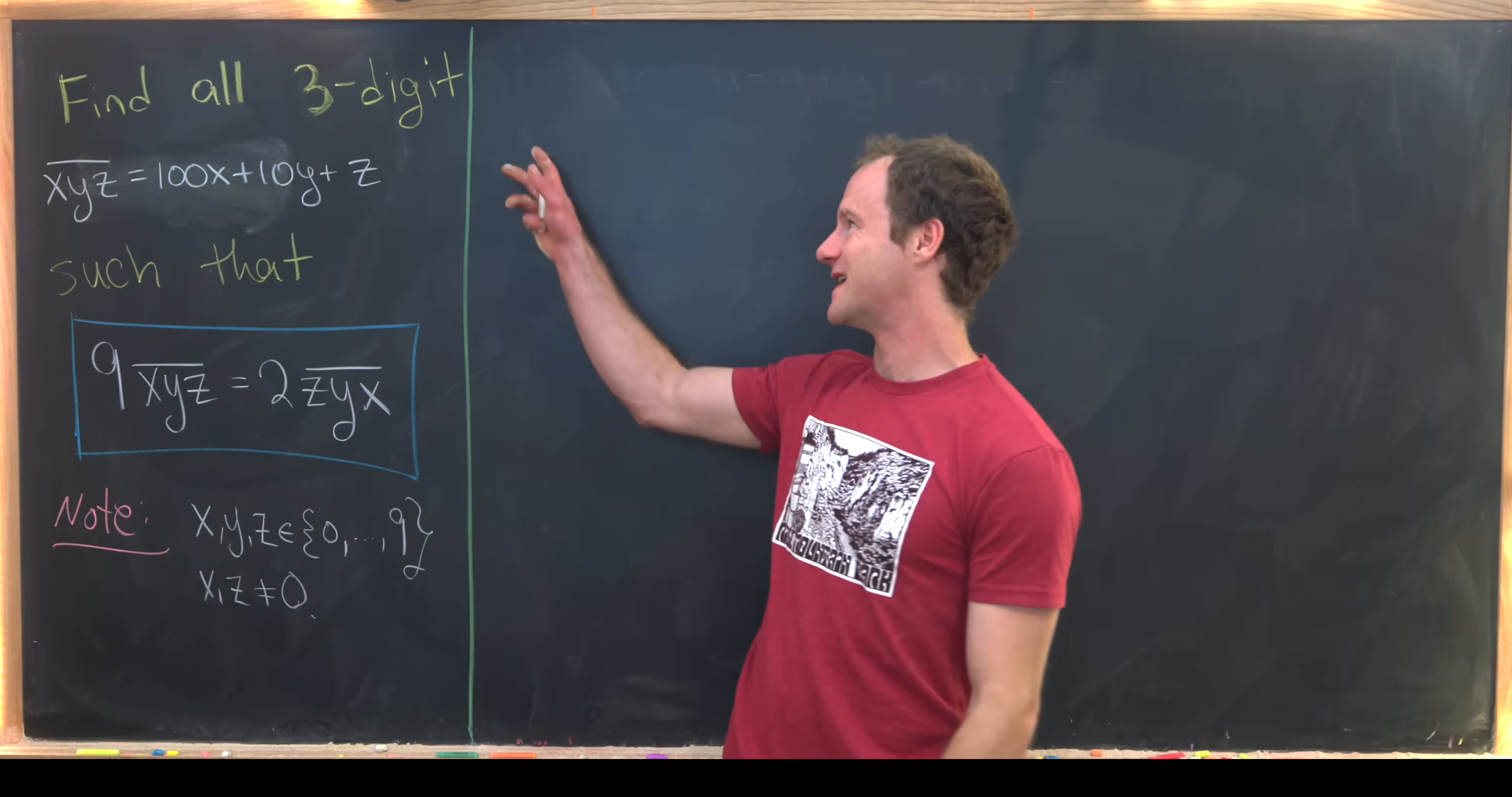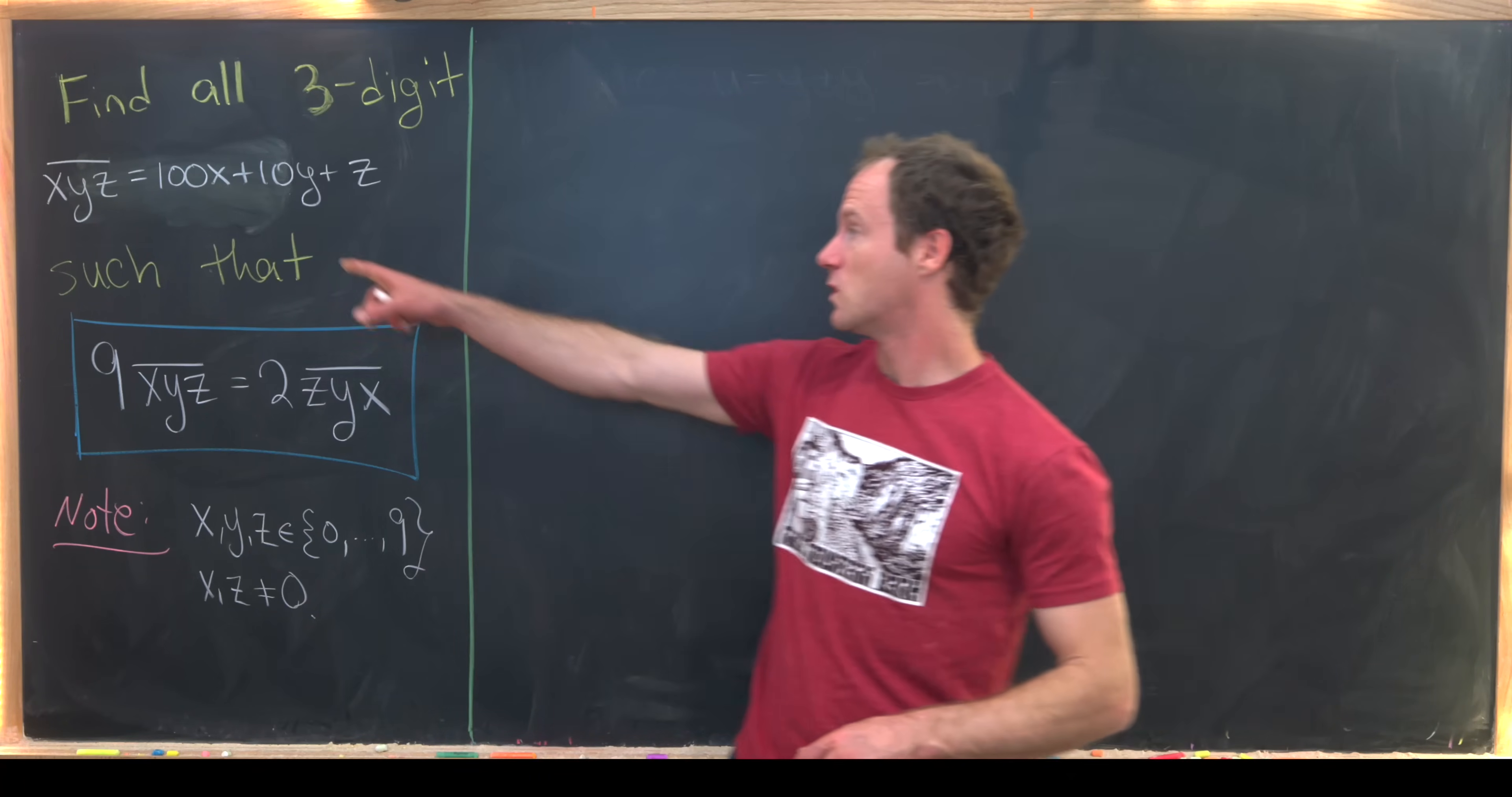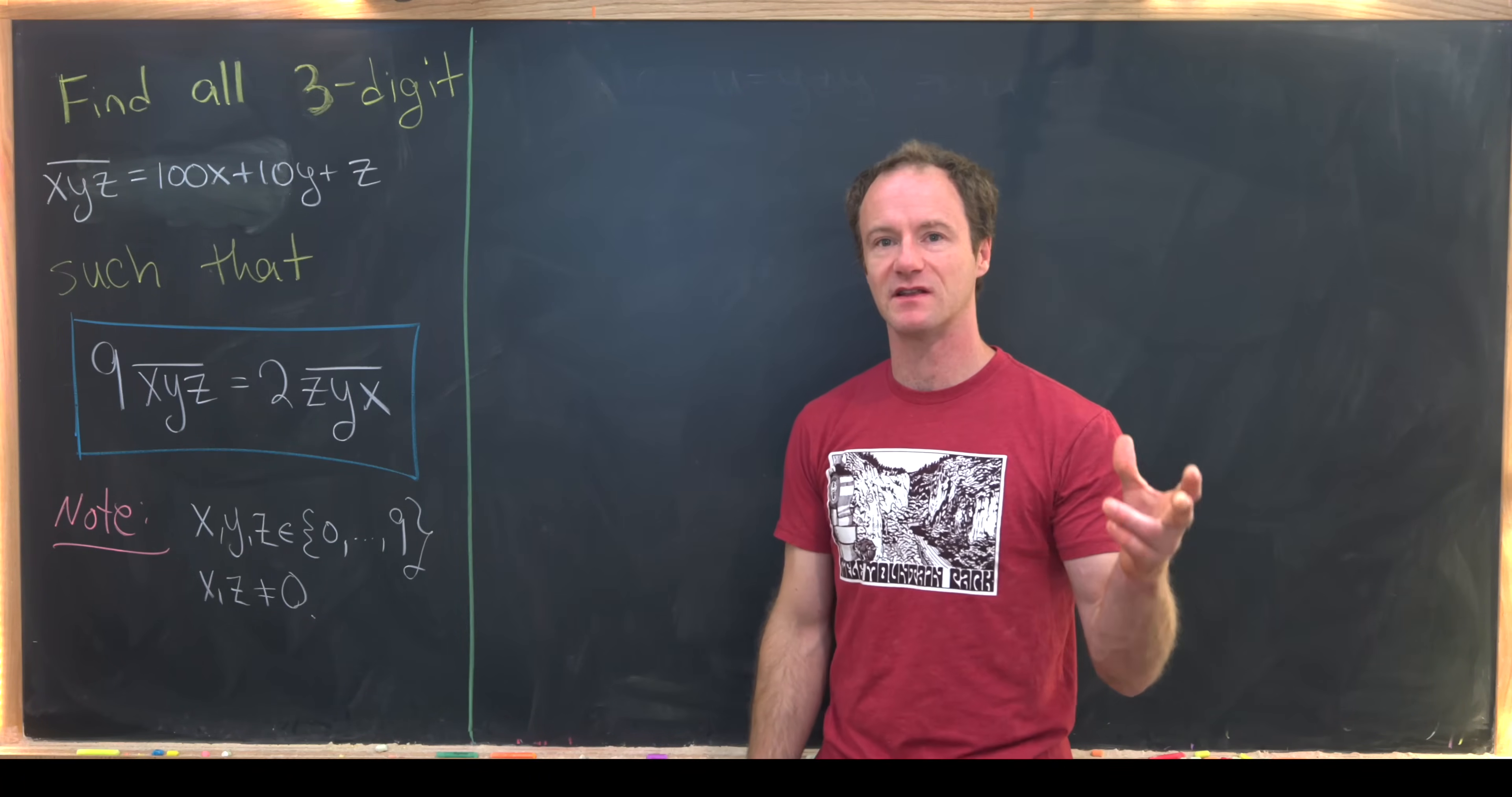So our goal is to find a three-digit number. We'll write it like x, y, z with a line over it.